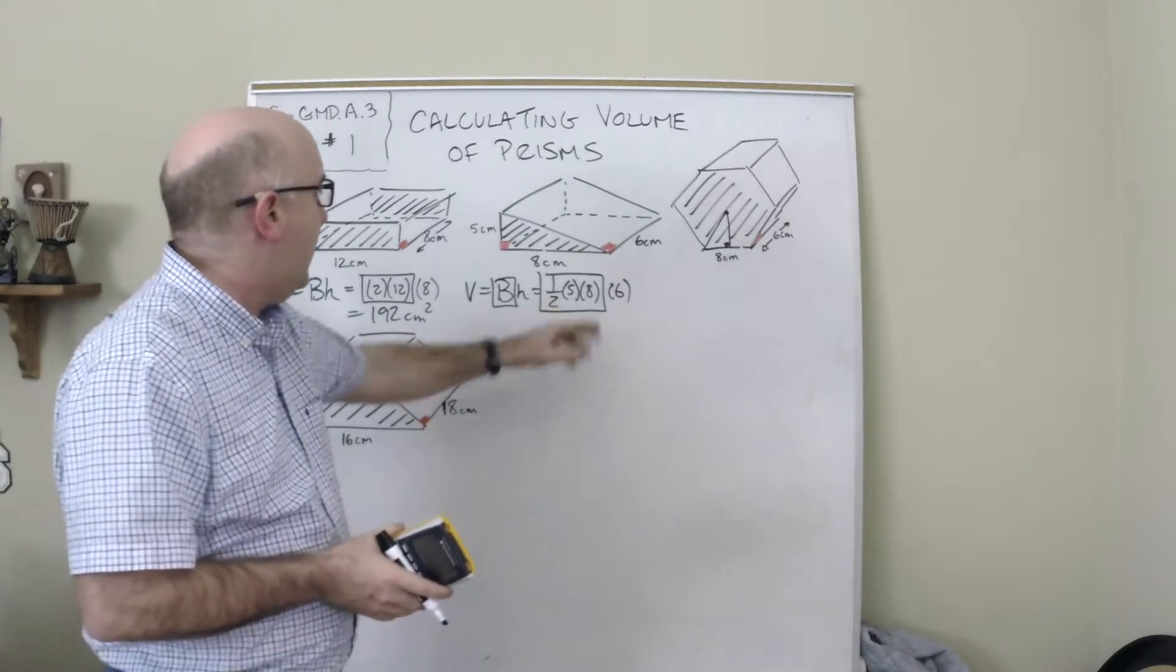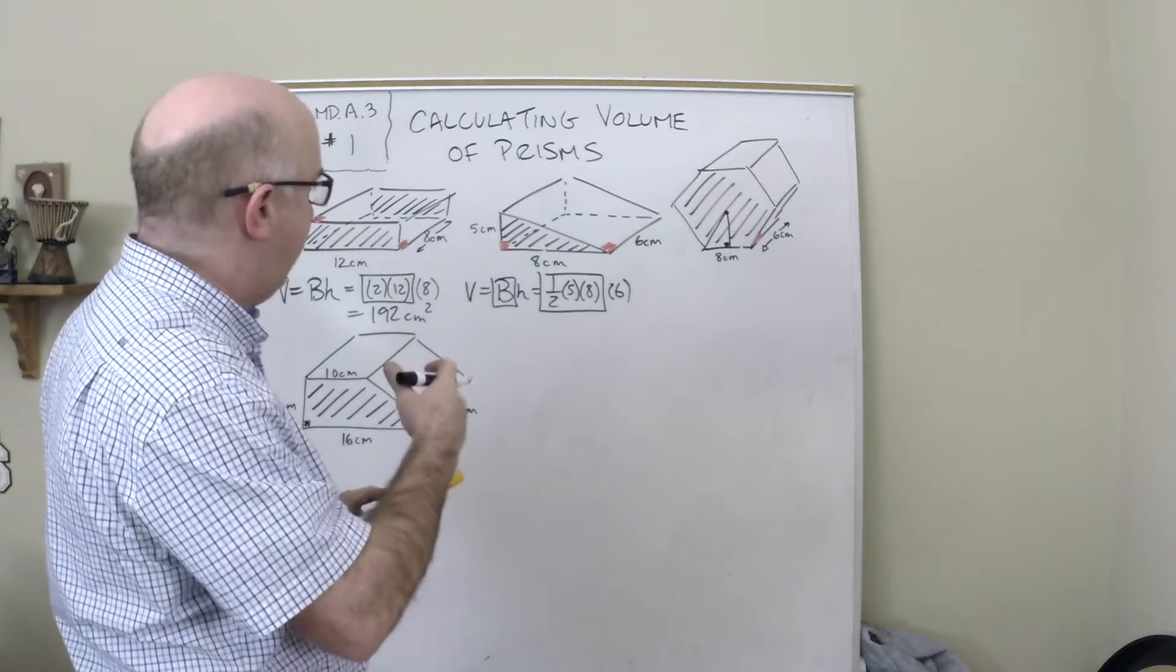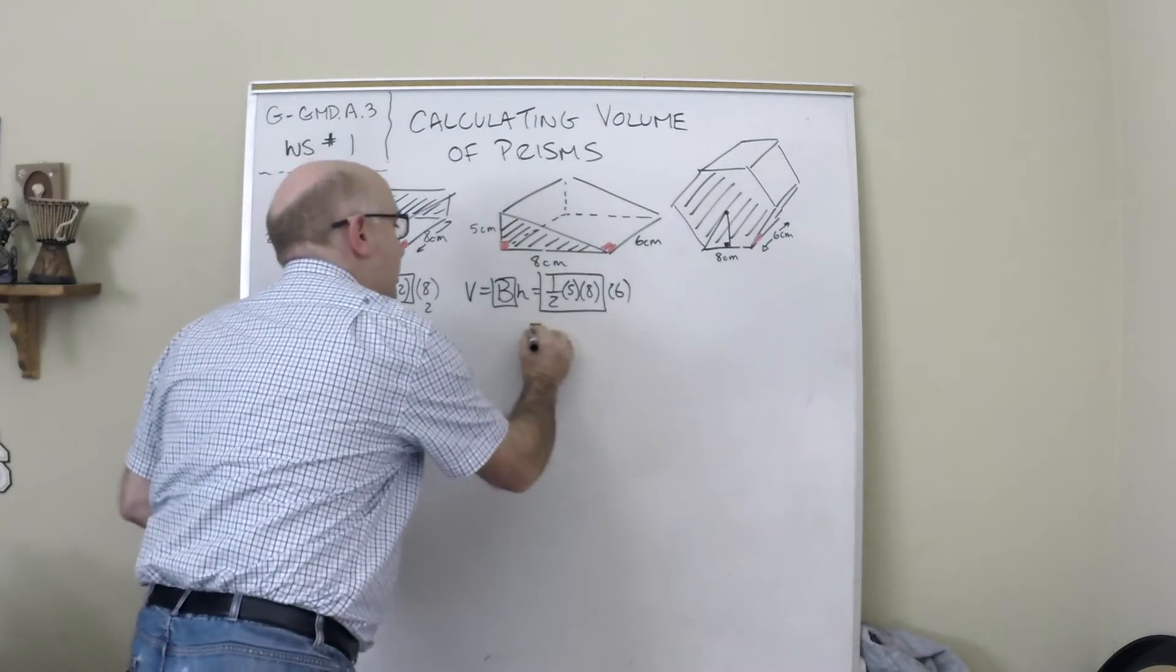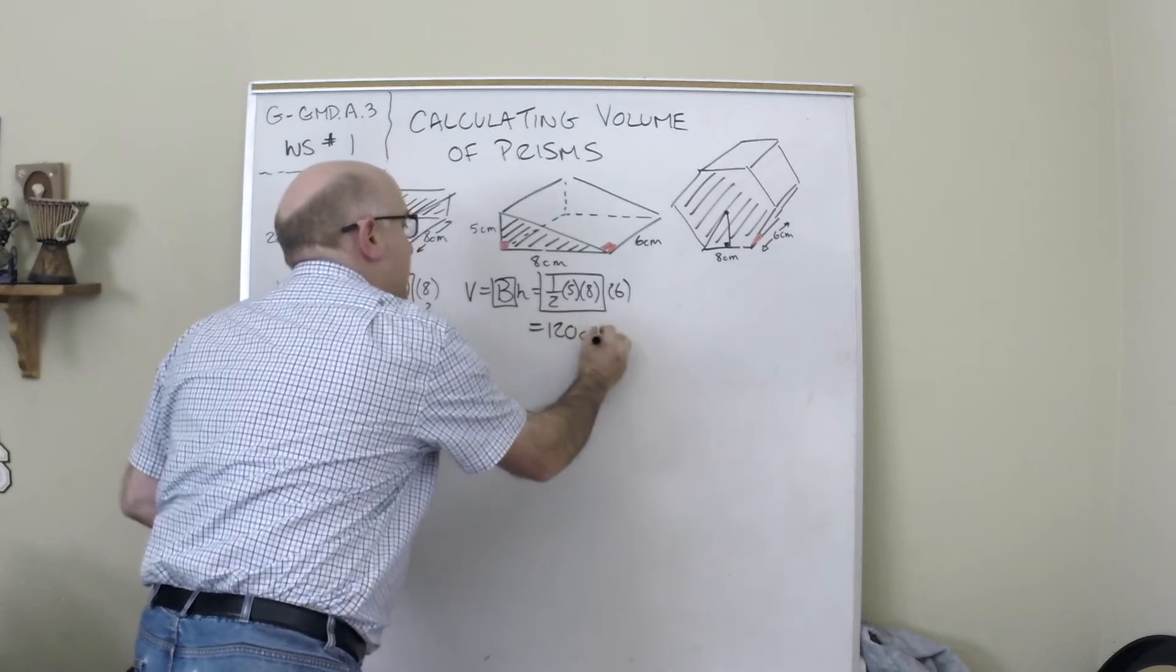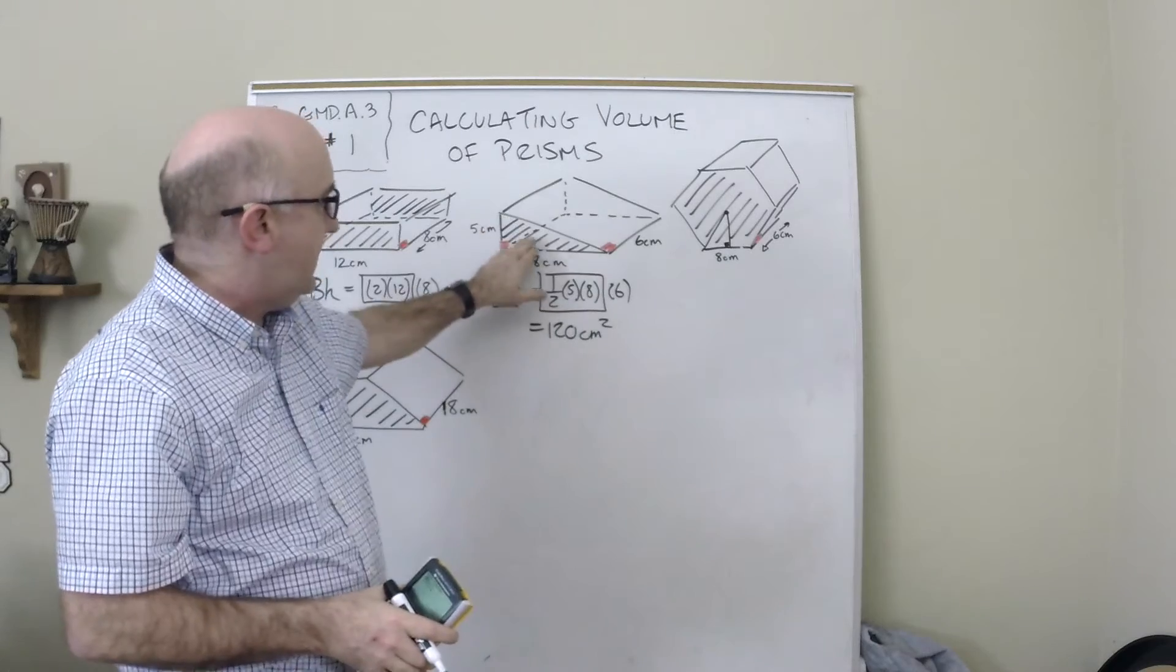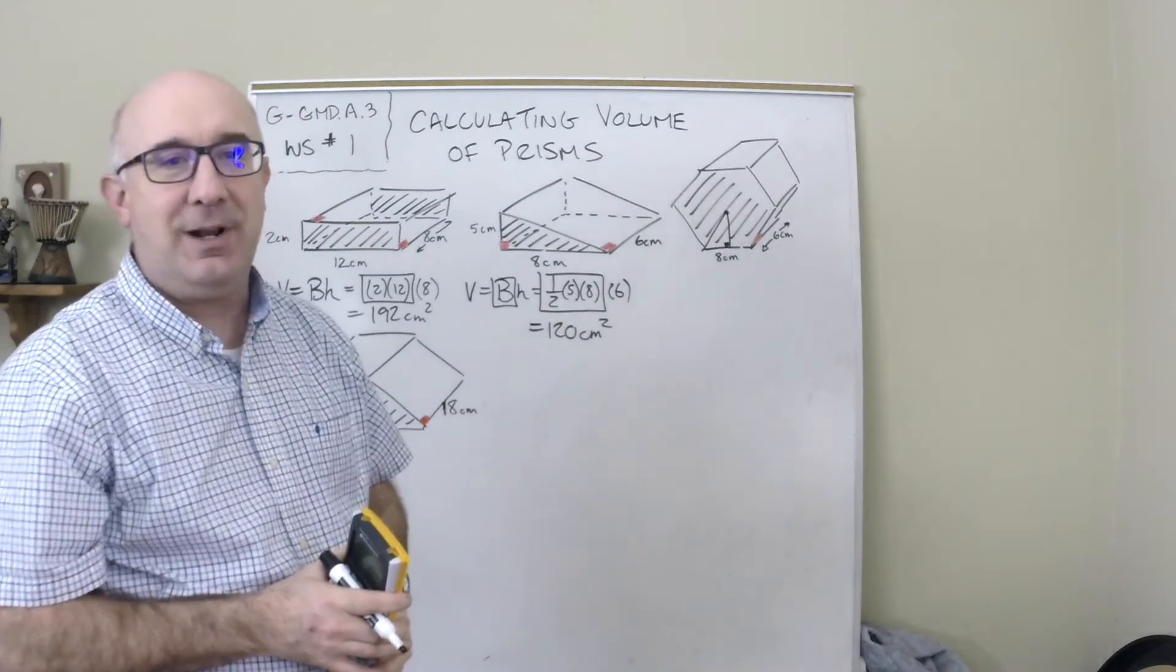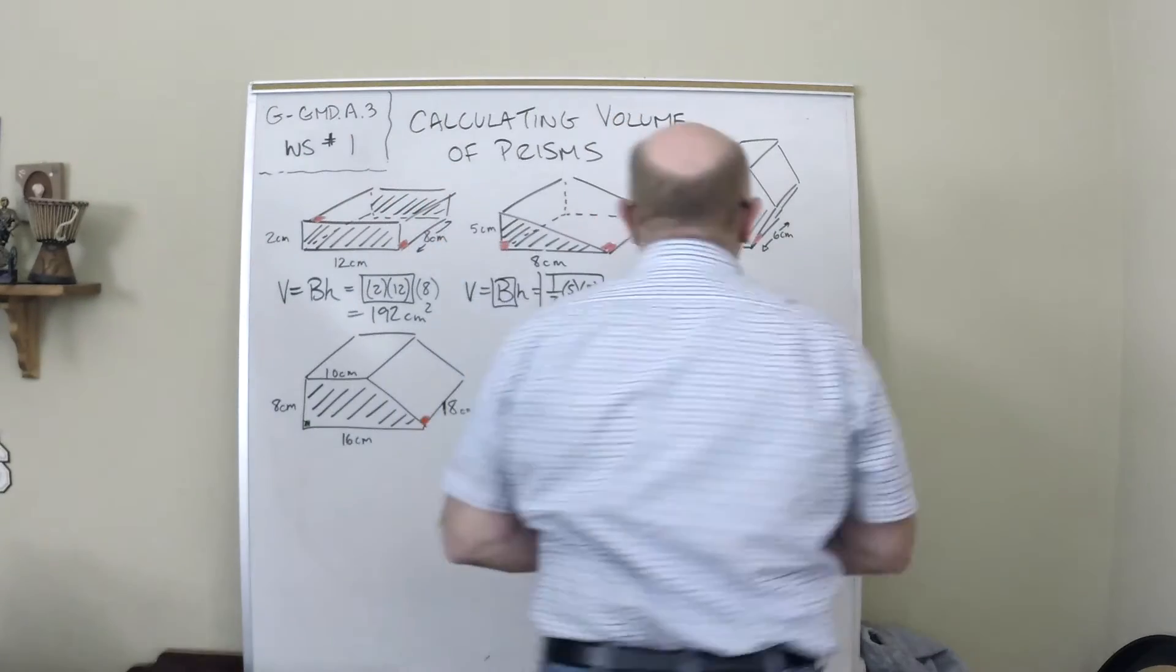And so here we have 4 times, let's see, 5, 20. This comes out to 120 centimeters squared in this case. Again, one front face that would be 20 and 20 stacking it six times gets us the total volume.